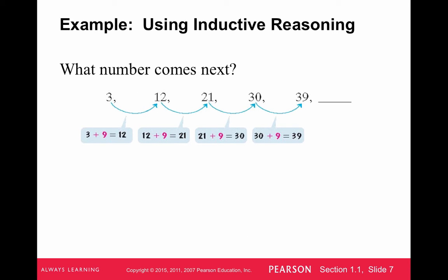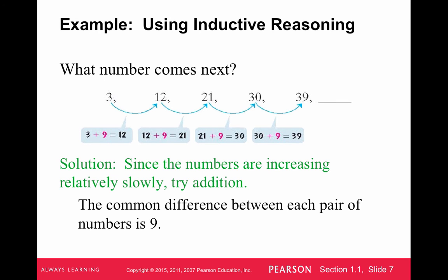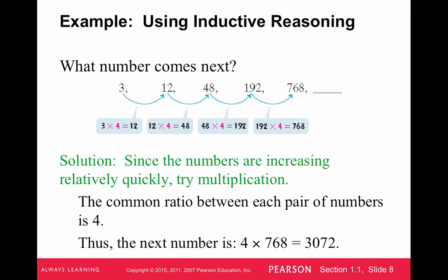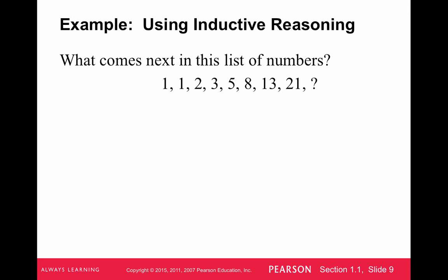Another example of inductive reasoning is looking at examples to come up with a pattern — you'll be doing this a lot in your homework. In one sequence, each number goes up by nine, so the next number after 39 is 48. In another, it looks like addition at first but then increases much more, so the pattern is multiplication by four — the next number is 768 times four, which is 3,072. We're looking at examples to find a pattern and make a conjecture about the next number.